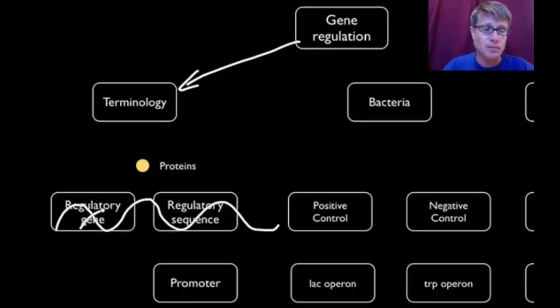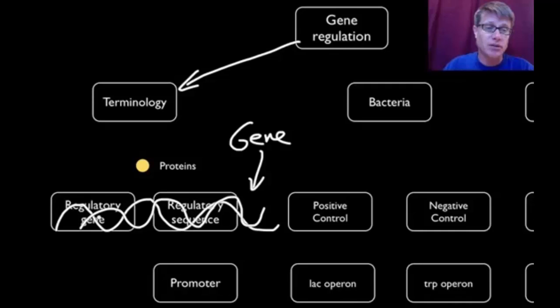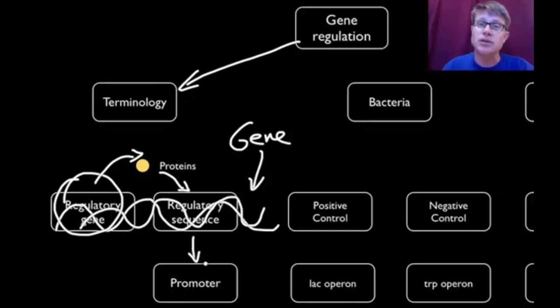So if DNA looks like this, the gene generally will be down here that we want to express or not. A regulatory gene will be somewhere else in the DNA. It secretes something called a regulatory protein which then can grab onto a regulatory sequence. An example of a regulatory sequence is called a promoter. Once this is all fit up then we can have RNA polymerase actually make the gene.